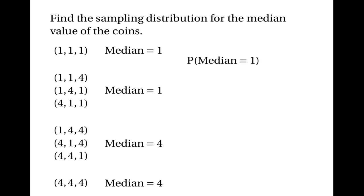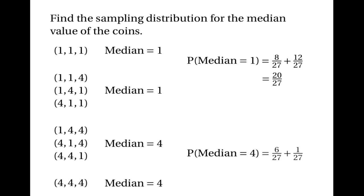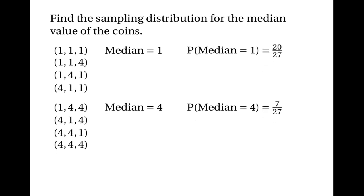Let's work out the probability of each value. The probability that the median equals one is the sum of the probabilities for the first two categories: 8/27 plus 12/27 equals 20/27. The probability that the median is four is 6/27 plus 1/27, which is 7/27. We can write these in a table showing the possible values and their probabilities — and this is the sampling distribution for the median.